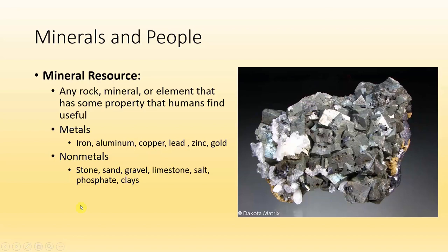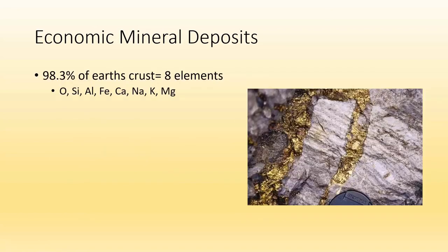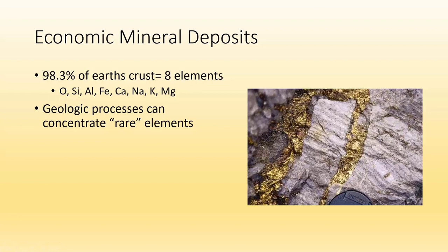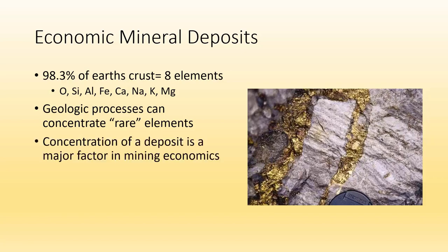Just to remind you, here are our eight most common elements in Earth's crust: oxygen, silicon, aluminum, iron, calcium, sodium, potassium, and magnesium. Most minerals on the planet are made of these. The rest of the elements on Earth are essentially rare, but certain geological processes can help to concentrate these rare elements. There's gold and silver everywhere, but it's not economical to mine your backyard — we need to figure out what geological processes concentrate these elements and how we can extract them.